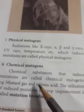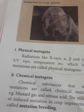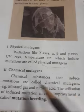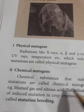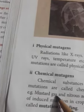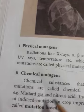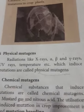Chemical mutagens are chemical substances that induce mutations. An example you have to know: mustard gas and nitrous acid.